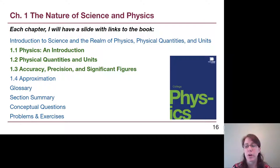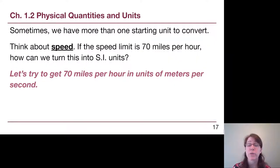There are two main ways that these unit conversions get tougher. The first is when there is more than one starting unit. For example, if we think about speed limits, the unit is always in miles per hour here in the U.S. If the speed limit is 70 miles per hour, we want to turn that into standard units. Instead of miles, our standard length unit is meters, and instead of hours, our standard time unit is seconds. Our goal is to get 70 miles per hour in units of meters per second.